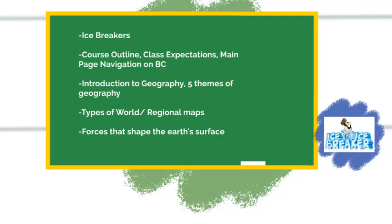Then we're going to look at the main page and make sure that we understand how to navigate certain components of our course on BC. On the main page, we'll find essential components such as the textbook in the form of a PDF, the course outline, a self-assessment portion, and the grading system. We'll be going over those and making sure that everybody has access to that.